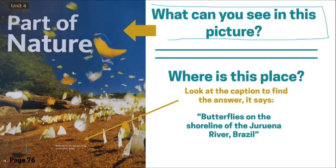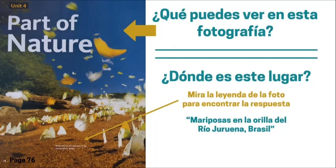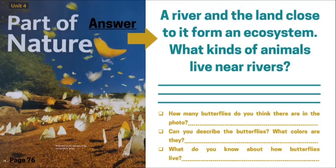We can see that they are yellow and also white colors. We can also see trees, sand, and some rocks. A river and the land close to it form an ecosystem. What kinds of animals live near rivers? This is a question that you can investigate on Google. We know that butterflies live near rivers, but which other animals can live near rivers?